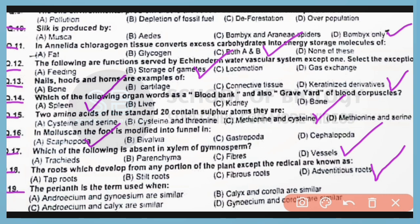Question number 19. The perianth is the term used when calyx and corolla are similar. Correct answer is option B.